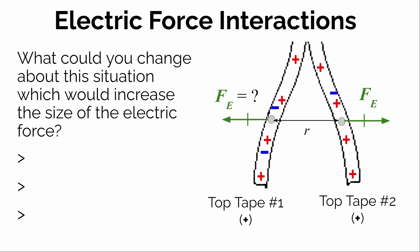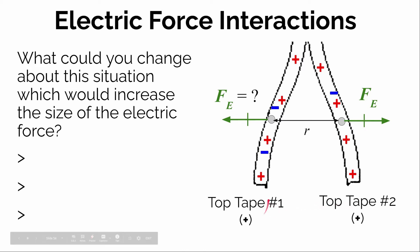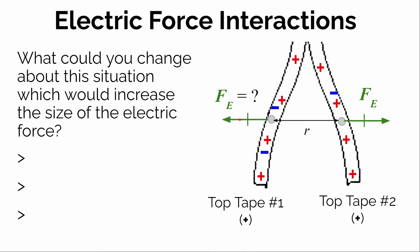I want you to think about this situation. Imagine we had two pieces of charged tape — both net positively charged. If we bring them close together, we know they're going to repel one another. There's an electrostatic force pushing them apart, and let's say they're at some distance between their centers of mass. So what could you change about this situation to increase the size of the electric force?